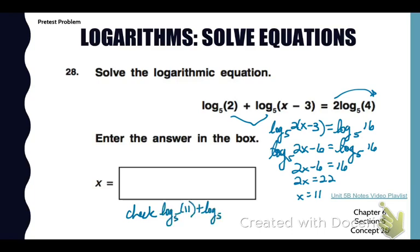So you can see I made a mistake in my check step. I put in 11 for the first value of the log, and I should have put in 2. Once I go back and do it correctly, I can see that the left side of the equation does match the right side. So my answer is 11.